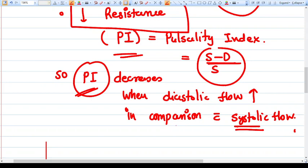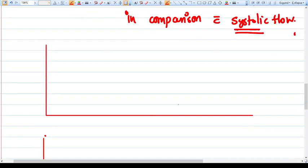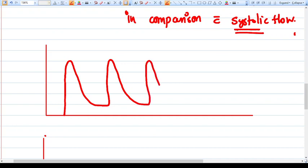So normal MCA Doppler looks like this: there is systolic velocity, then diastolic velocity, then it comes to systolic velocity, then diastolic velocity. This is how a normal color Doppler of MCA is.